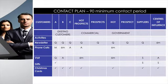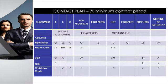Once we've done that, we can build them into a contact plan. Across the top we've set our customers and also included prospects and other groups. For this example we've got existing customers — all commercial business customers, A, B, and C — plus commercial prospects (hot and normal), government clients and prospects, suppliers, and centers of influence. Centers of influence are people more likely to refer you work than be a client themselves — they could be accountants, lawyers, manufacturers, or suppliers.